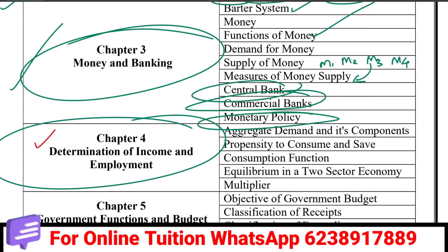Determination of income and employment — there is a problem with income determination. The aggregate demand and its components are covered. The consumption function, Marginal Propensity to Consume, and Marginal Propensity to Save are also included.